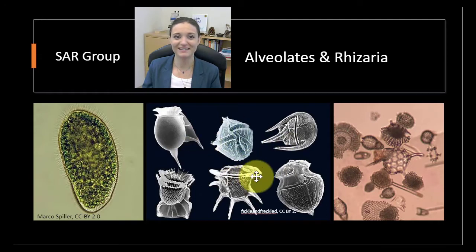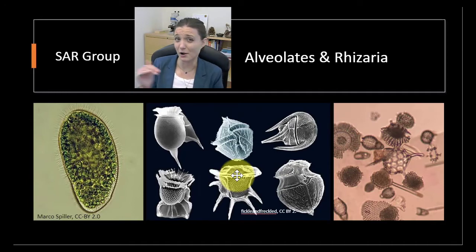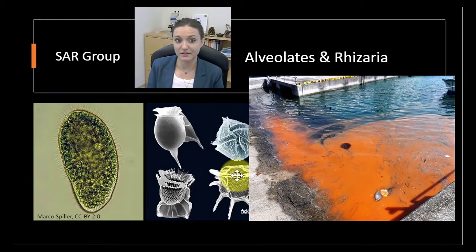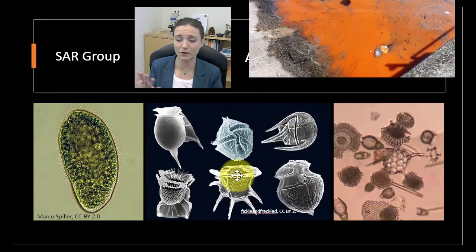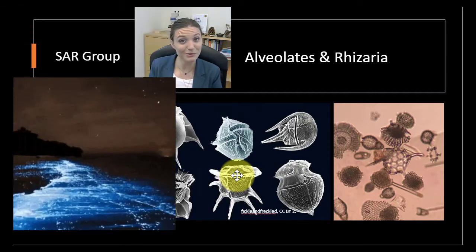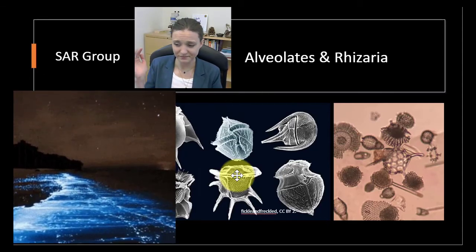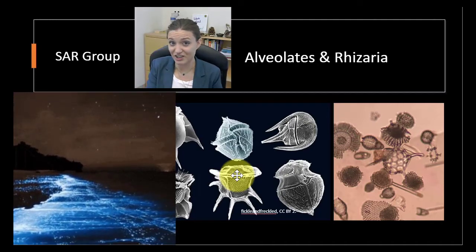The other main group in the alveolates is dinoflagellates. They often get a bad rap, but they're really important as primary producers of ocean ecosystems, just like diatoms. During a harmful algal bloom - a HAB - or red tide, those are often caused by dinoflagellates. They can produce neurotoxins that cause seizures and amnesia in mammals. But dinoflagellates can also be super cool - if you've ever seen images of a bioluminescent ocean with waves glowing, that bioluminescence is caused by dinoflagellates in the water.